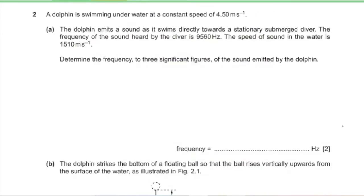Question 2, part A: a dolphin is swimming underwater at a constant speed of 4.5 m/s and emits a sound wave as it swims directly towards a stationary submerged diver. The frequency of the sound heard by the diver is 9560 Hz. The speed of sound in water is 1510 m/s. Calculate the frequency of the sound emitted by the dolphin to 3 significant figures.